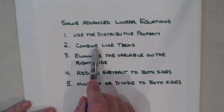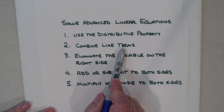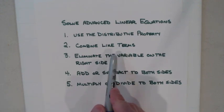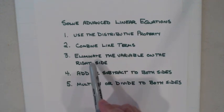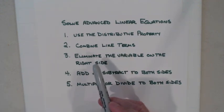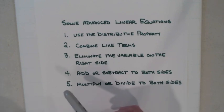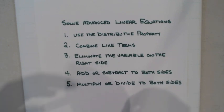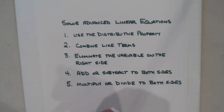The next thing you need to look for is combining like terms. By combining like terms you're making the equation simpler to solve — putting things together, making a lot of terms into just a few terms.